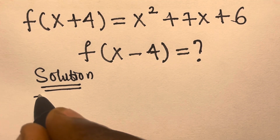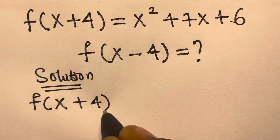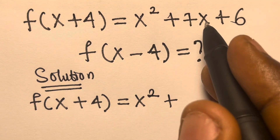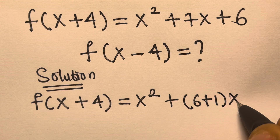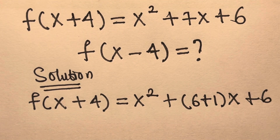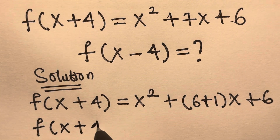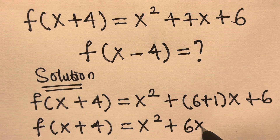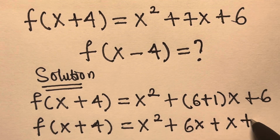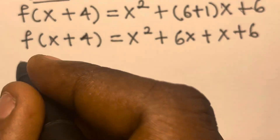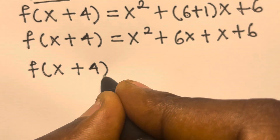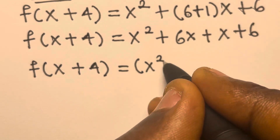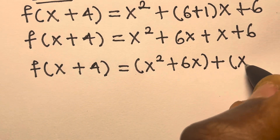We have f(x+4) equals x squared plus 7x plus 6, which we can multiply by (x+6). From here we have f(x+4) equals x squared plus 6x plus x plus 6. Taking x squared plus 6x as one factor and x plus 6 as another factor.